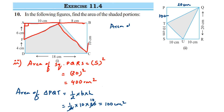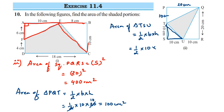Next, area of triangle TSU equals half into base into height. Both dimensions here are 10, so half × 10 × 10. Cancelling 2 and 10 gives 5, and 5 × 10 = 50 centimeter square.